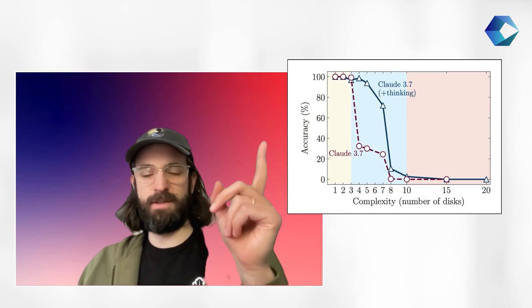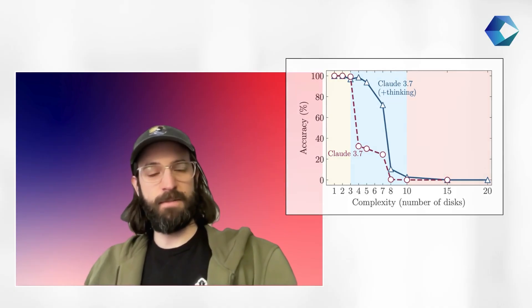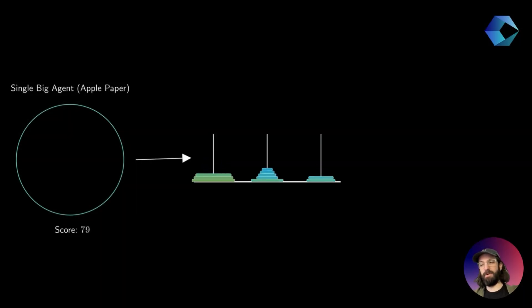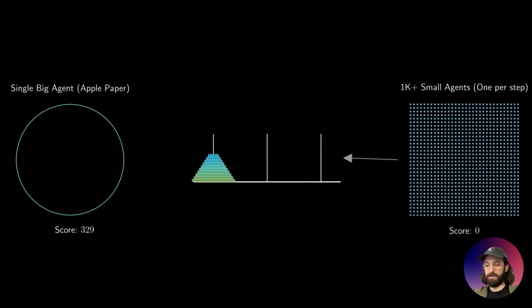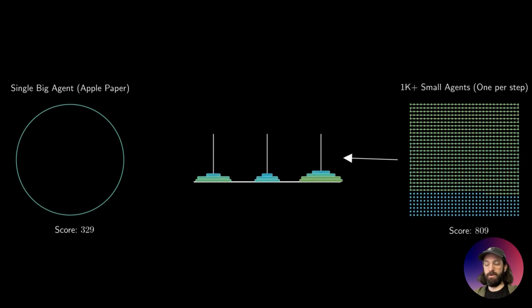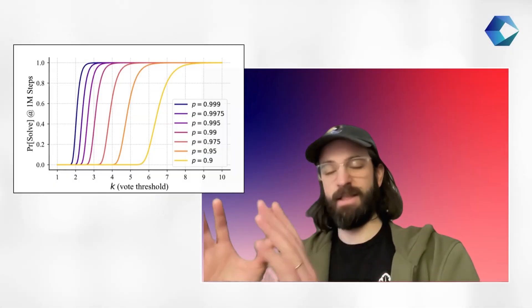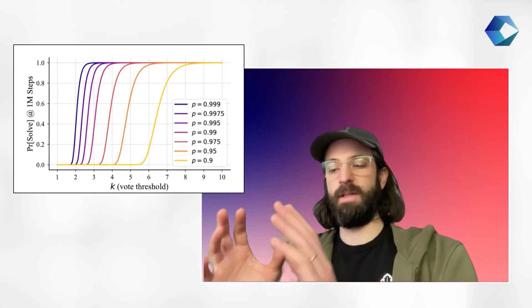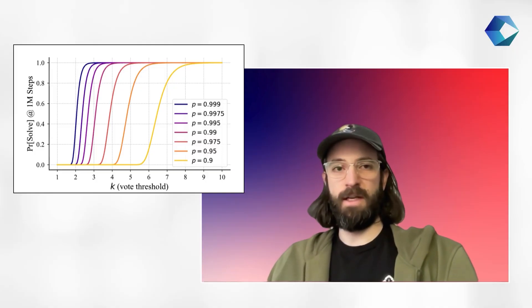In the Apple paper, state-of-the-art single agent reasoning models tend to fail after at most a few hundred steps. They'll hit some error and after one error is hit the entire task fails. If we simply decompose the problem into steps so that each agent is assigned a single step to solve, 1,000 agents can solve the 10 disc problem with no problem. The Apple paper only went up to 12 discs which is 4,000 steps.